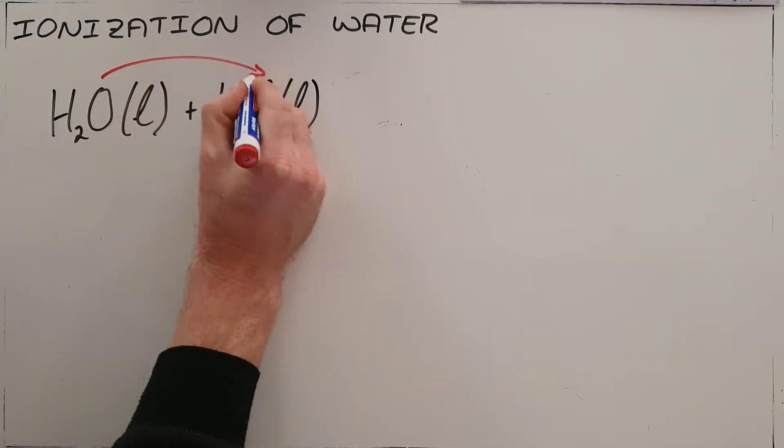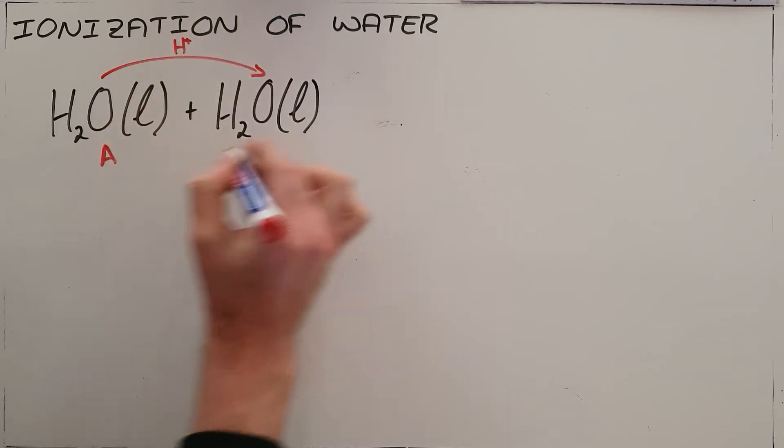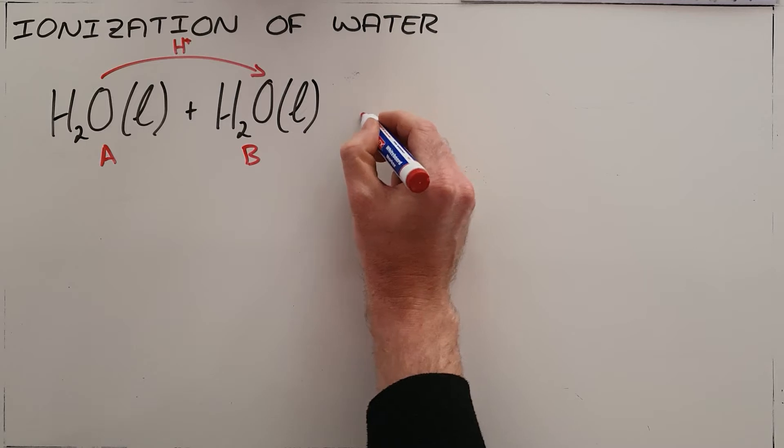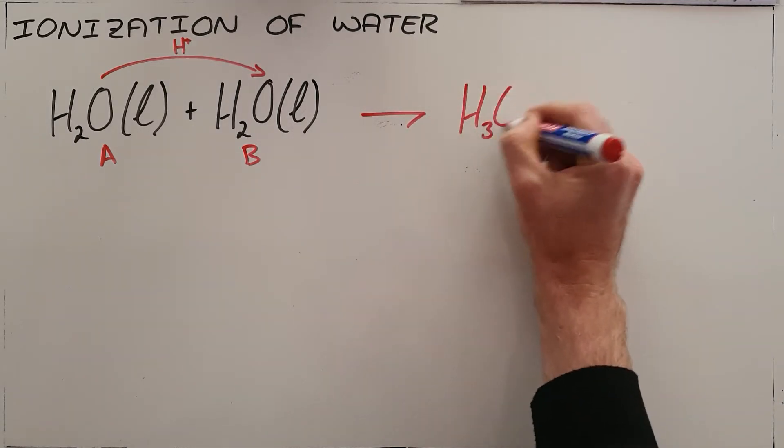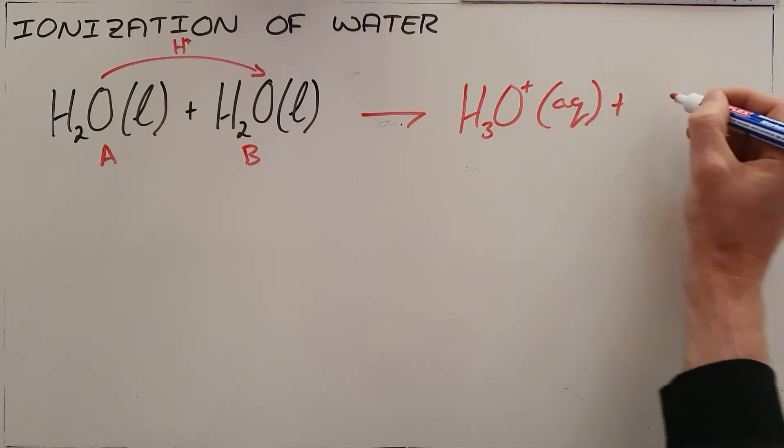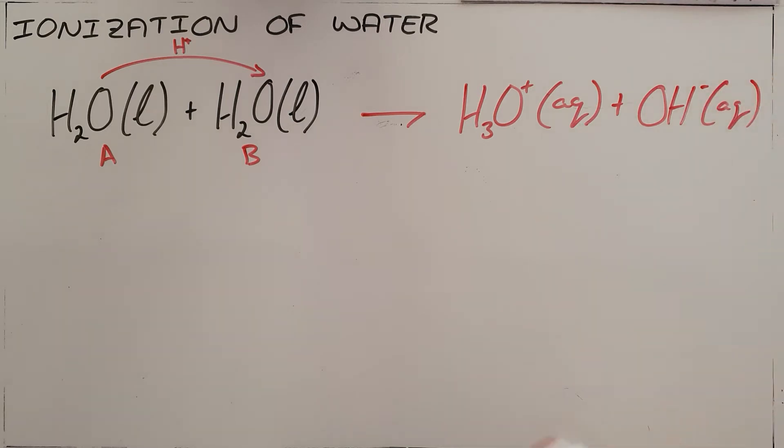This basically means that it ionizes itself where one water molecule would act as the acid, another would act as the base that receives that proton, and we see that that would then form hydronium ions and hydroxide ions that are in aqueous solution.